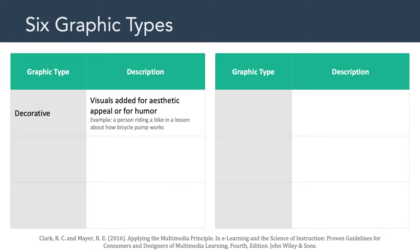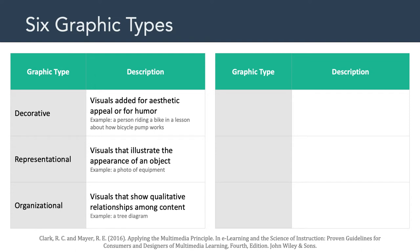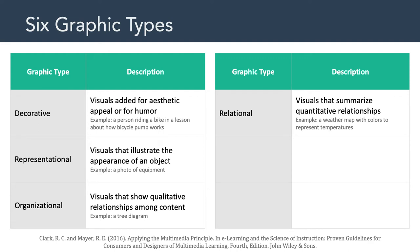The first graphic type is decorative — visuals added for aesthetic appeal or humor. An example is a person riding a bike in a lesson about how a bicycle pump works; the picture is topically relevant but has nothing to do with how a bike pump actually works. The second graphic type is representational — visuals that illustrate the appearance of an object, such as a photo of equipment. The third graphic type is organizational — visuals that show qualitative relationships among content, such as a tree diagram.